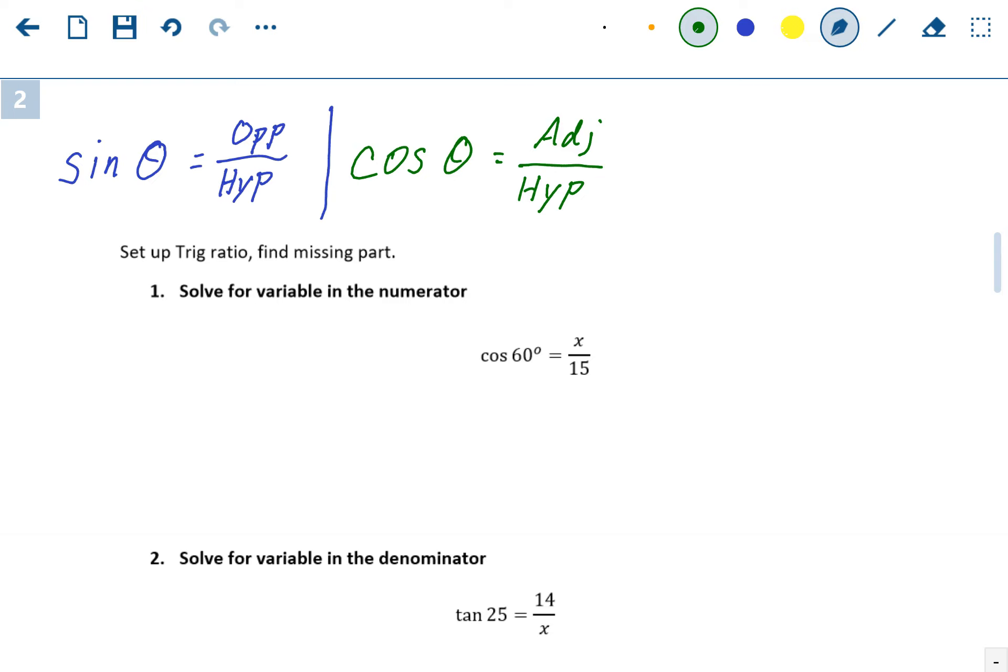And then lastly is tangent. The tangent of an angle is equal to the ratio of the opposite side divided by the adjacent side. So sine opposite over hypotenuse, cosine adjacent over hypotenuse, tangent opposite over adjacent.